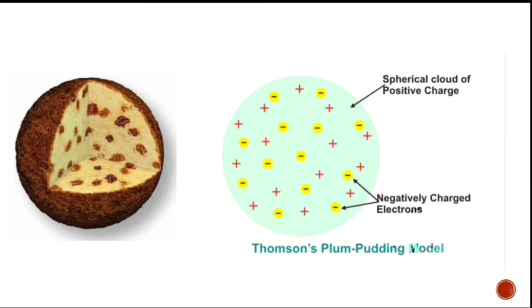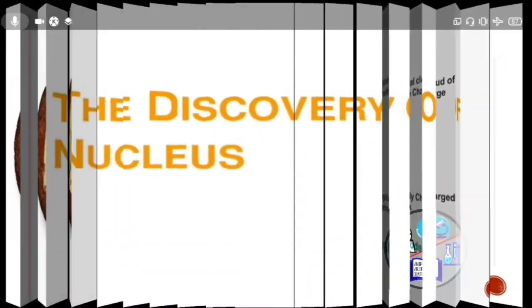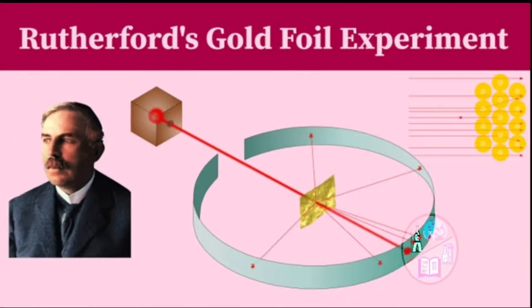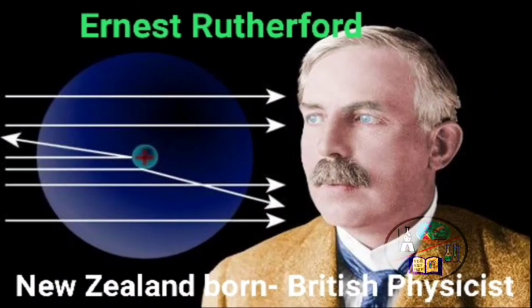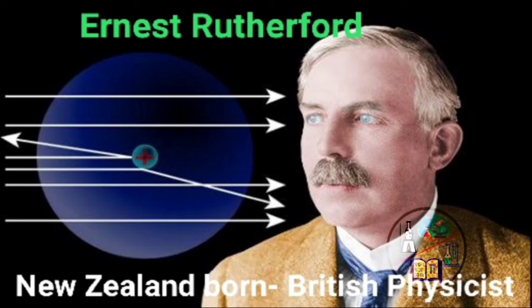But this model was given up as it failed to explain the existence of some observed phenomena about the atom and so it was not accepted. Later in 1911, Ernest Rutherford, a New Zealand born British physicist, carried out his now famous gold foil experiment to find the arrangement of electrons and protons in an atom.